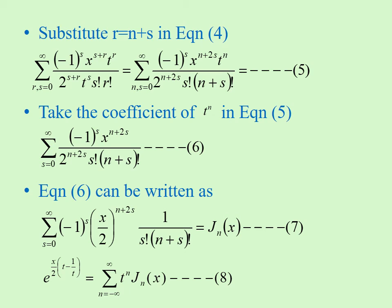This is nothing but Jn of x, the Bessel differential equation. So, we can write e power x by 2 into t minus 1 by t is equal to summation n is equal to minus infinity to plus infinity, t power n times Jn of x.